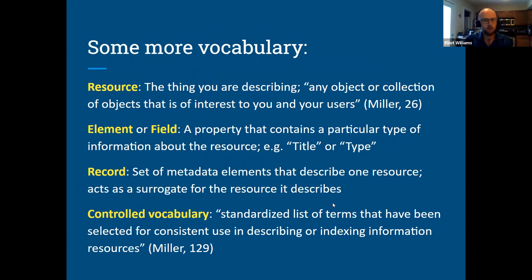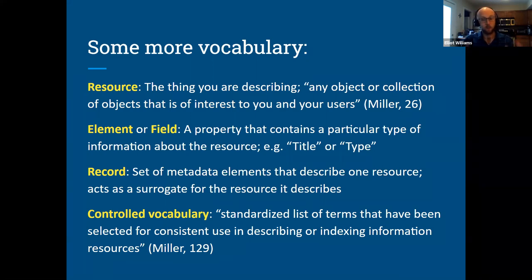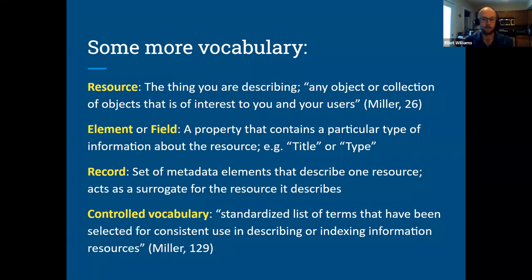Some vocabulary terms used when talking about metadata: the resource is the thing being described — a book, photograph, oral history, object, or even a collection. Within metadata, we talk about elements or fields — the particular property that holds a particular type of information, such as title, subject, or type. All of those elements together about a resource create the metadata record — the complete set of metadata elements about that resource.